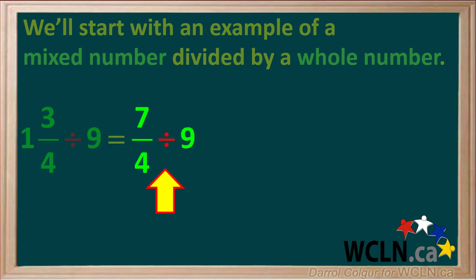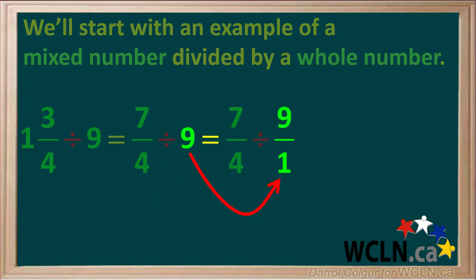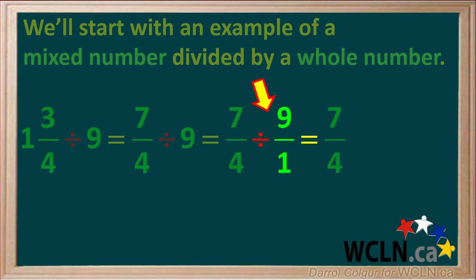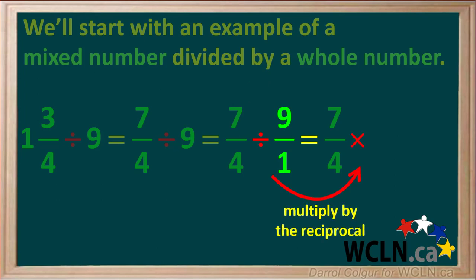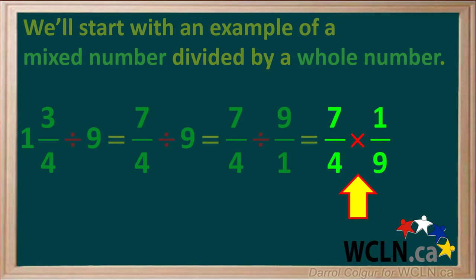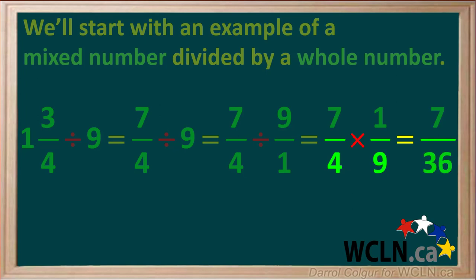The question now is seven quarters divided by nine. Nine is the same as nine over one, so the question becomes seven over four divided by nine over one. Remember that dividing by nine over one is the same as multiplying by the reciprocal of nine over one, which is one over nine. So we have seven over four times one over nine. We can't do any simplifying of the diagonals. The numerator is seven times one, which is seven, and the denominator is four times nine, which is 36. So our final answer is 7/36.